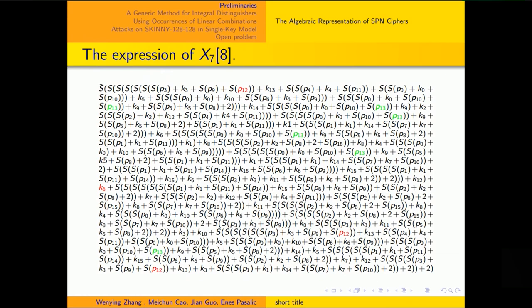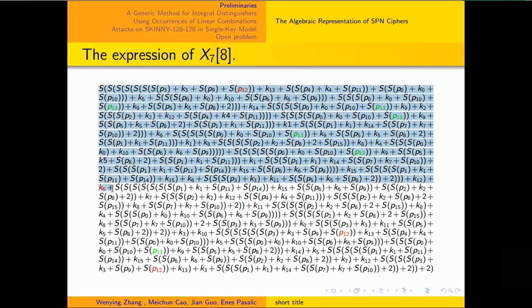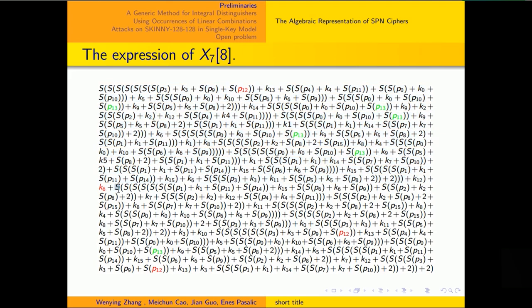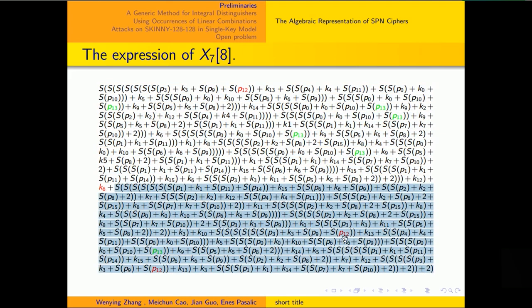The expression can be divided into two parts. In the first part, P12 appears once and P13 appears five times. In the second part, P12 appears twice but P13 appears once.